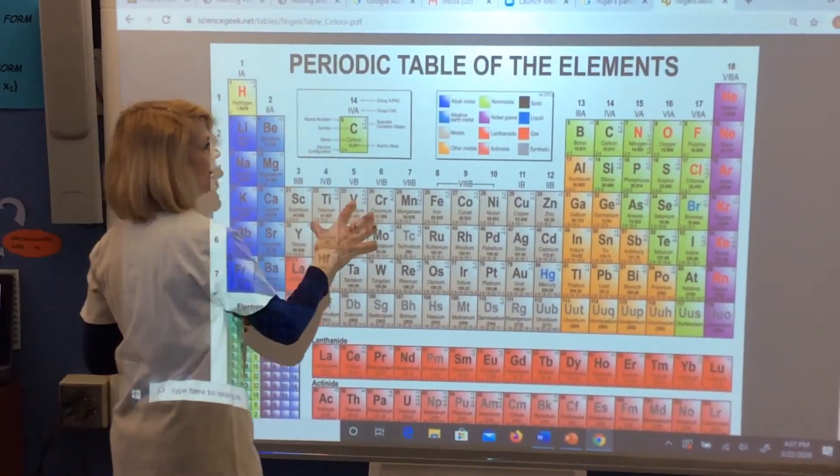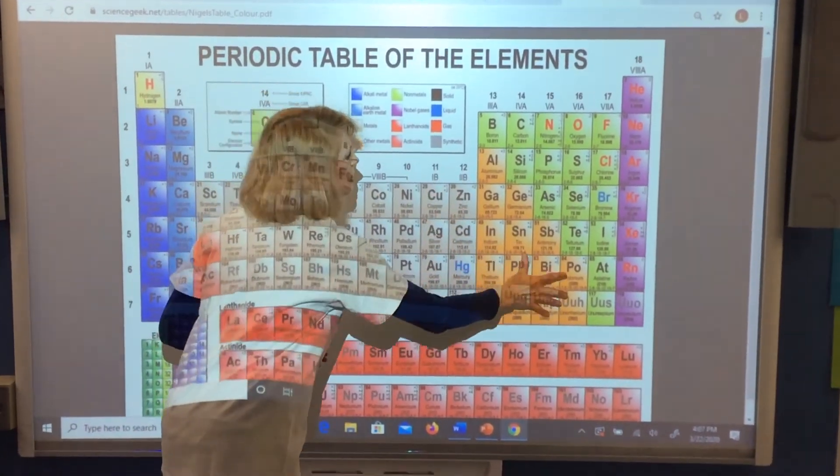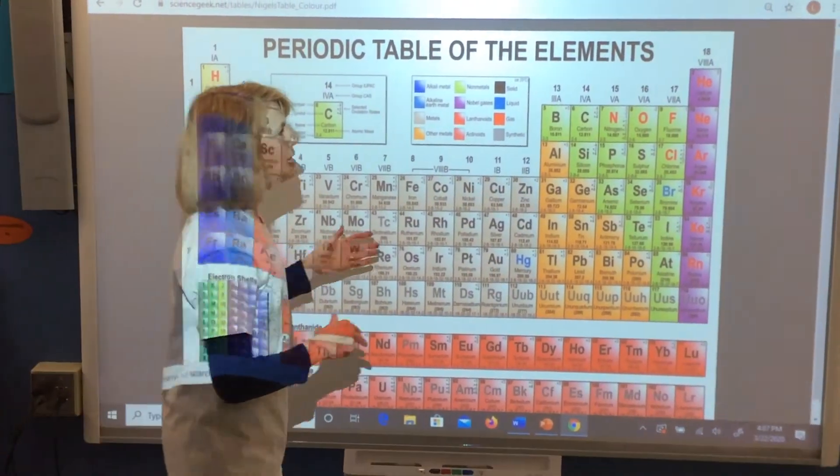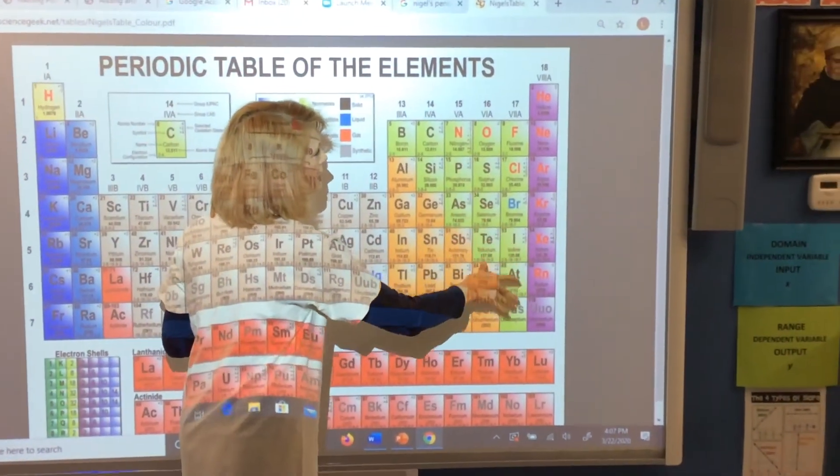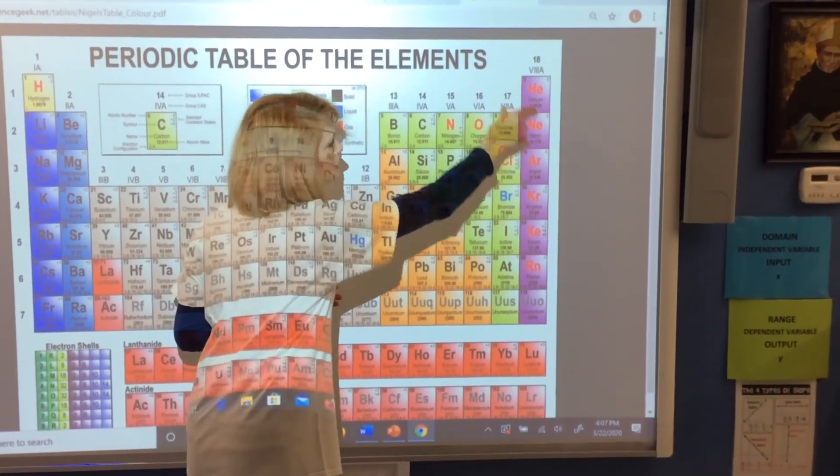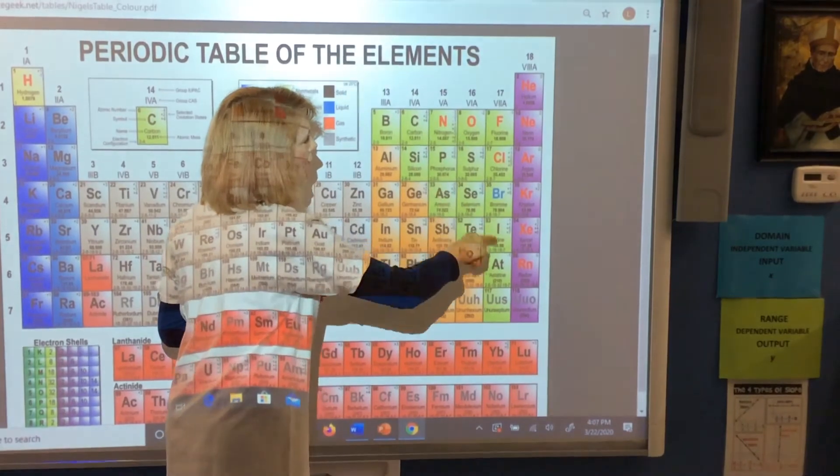All of this left-hand side of the periodic table, these are all metals. These green ones over here, and the purple ones, these are non-metals.